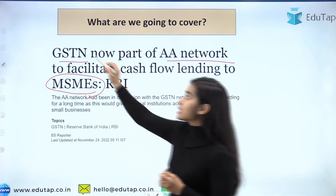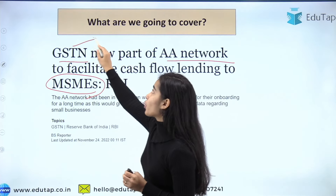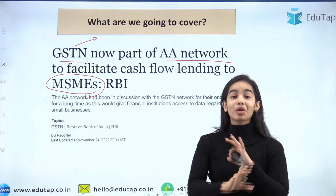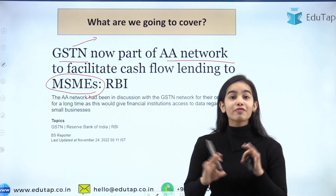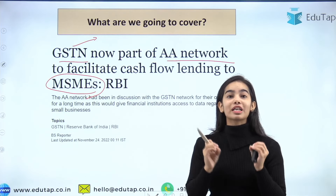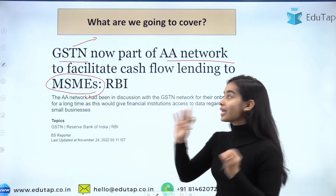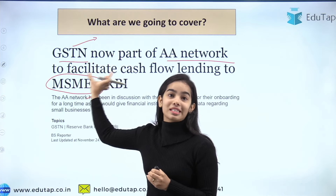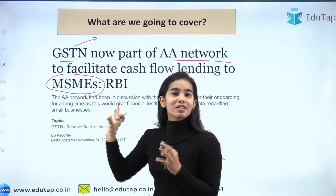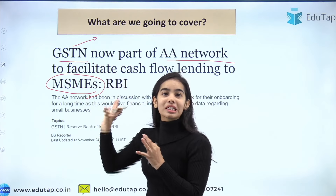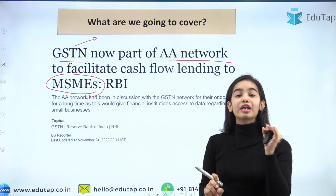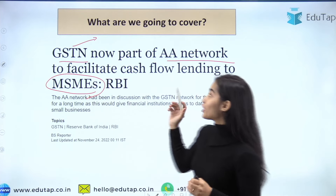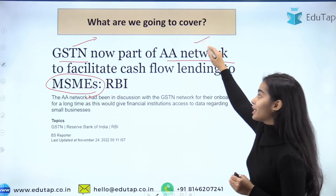The GSTN is very important — it is the mother database of GST. It holds all the information, all the financial data regarding GST. This is a very important thing and it is now going to become the financial information provider for the Account Aggregator network.